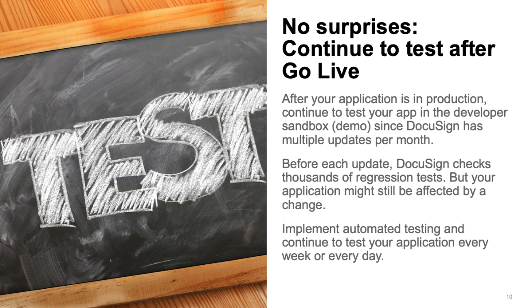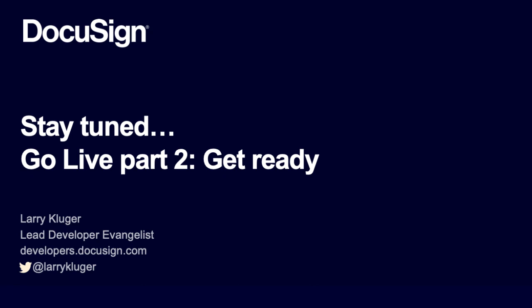After your application is in production, continue to test your application in the developer sandbox — the demo platform — since DocuSign releases multiple software updates every month. Before each update, DocuSign checks thousands of regression tests, but your application might still be affected by a change. DocuSign recommends that you implement automated testing and continue to test your application with the developer sandbox system every week or every day to avoid surprises. If your automated testing discovers an unexpected breaking change, please contact DocuSign customer support immediately.